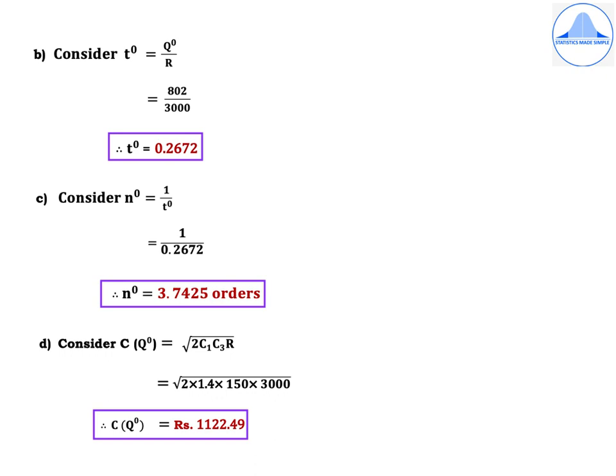Reorder time: T⁰ = Q⁰ / R = 802 / 3,000 = 0.2672 years. Frequency of replenishment: N⁰ = 1 / T⁰ = 1 / 0.2672 = 3.7425 orders. Optimal cost: C(Q⁰) = √(2C₁C₃R) = √(2 × 1.4 × 150 × 3,000) = Rs.1122.49.